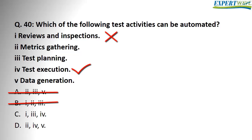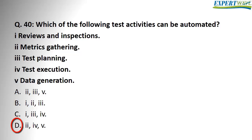That tells us answer D is correct because it doesn't include option 1. To confirm: option 1 (reviews and inspections) and option 3 (test planning) cannot be automated. On the other hand, options 2 (metrics gathering), 4 (test execution), and 5 (data generation) can be automated. So the correct answer is D. Thank you.